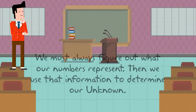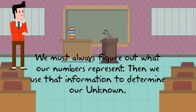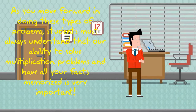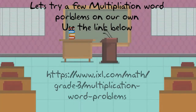One of the major factors that we always have to remember is we must always figure out what our numbers represent. Then we use that information to determine our unknown, usually represented by a letter. As you move forward in doing these types of problems, it's important to understand that our ability to solve multiplication problems and have all our facts memorized is very important. Good job today. Now let's try a few multiplication word problems on our own. Use the link below. Good luck and have fun.